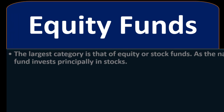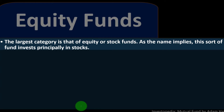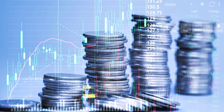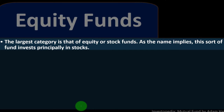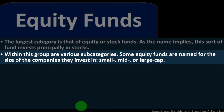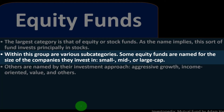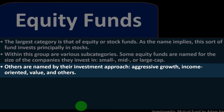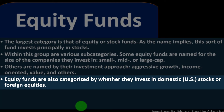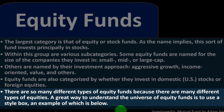The largest category is equity or stock funds. This makes sense because the original idea was that individual investors wanted exposure to stocks but didn't want to buy individual stocks — it's quite expensive to diversify that way. As the name implies, this type of fund invests principally in stocks. Within this group there are various subcategories: some equity funds are named for the size of the companies they invest in — small, mid, or large cap. Smaller companies are usually more risky because we're hoping they'll grow more, while large cap companies are typically stable. Others are named by investment approach: aggressive growth, income-oriented, value, and others.